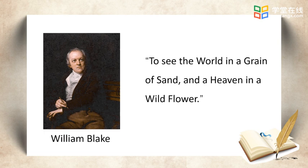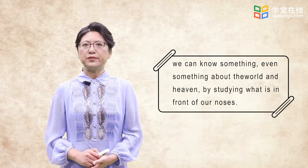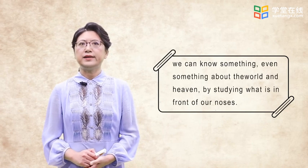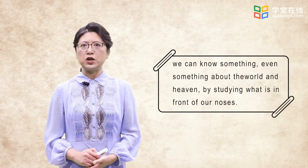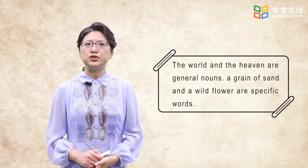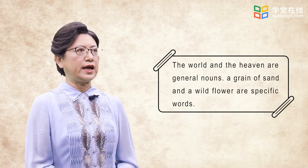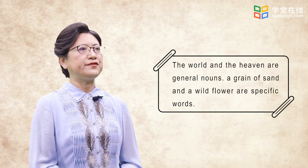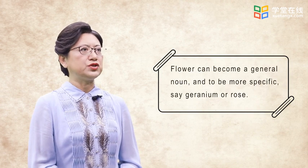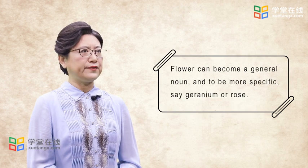This English poet, rather like the Chinese Zen poets, informed us we can know something — even something about the world and the heaven — by studying what is in front of our noses. The world and heaven are general nouns. A grain of sand and white flowers are specific words. Flower can become a general noun, and to be more specific, we can say geranium or rose. They are specific nouns.